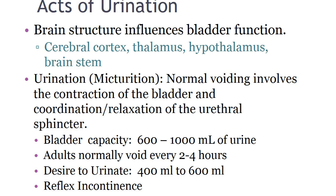Urinary incontinence can occur in several ways: overflow, stress, urge, multifactorial, or total — each type has specific nursing interventions. Reflex incontinence is urination without the sensation to void. This occurs when there is damage to the spinal cord above the sacral area, causing loss of voluntary control of urination, though the micturition reflex pathways remain intact. If a chronic obstruction caused by neurological damage hinders bladder emptying over time, the reflex changes, causing bladder overactivity and possibly incomplete bladder emptying.